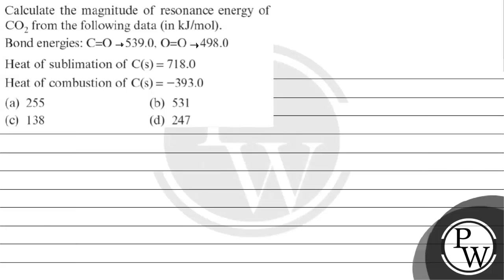Let's read this question. Calculate the magnitude of resonance energy of CO₂ from the following data: bond energy of C=O is 539 kJ/mol, bond energy of O=O is 498 kJ/mol, heat of sublimation of carbon is 718 kJ/mol, heat of combustion of carbon is -393 kJ/mol. Option A: 255, Option B: 531, Option C: 138, Option D: 247.